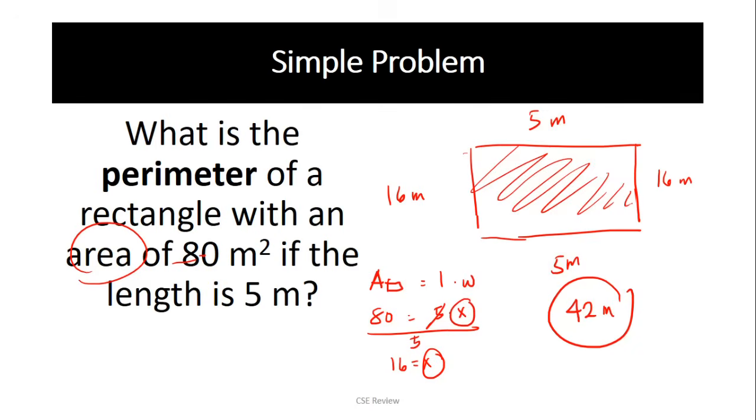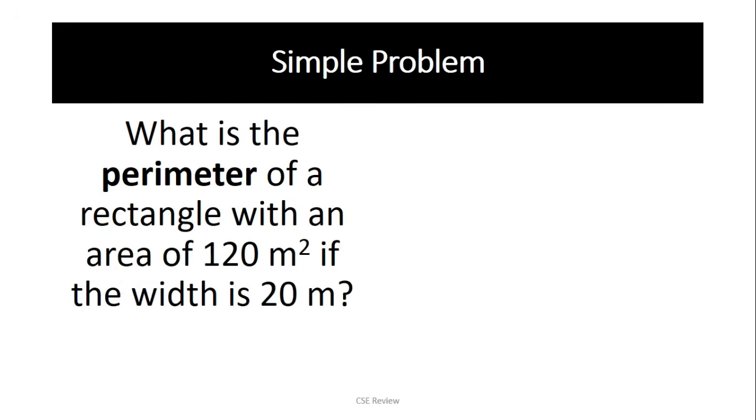Ang ginawa natin is reverse engineer. From that 80, we got the other side or the width in this case. Then complete the circle, add everything to get the perimeter. So I want you to try it out for yourself. We'll change the information. Hit pause now.